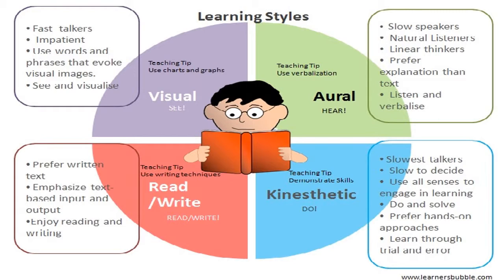Visual learners are fast talkers, impatient, use words and phrases that evoke visual images, and visualize. Aural learners are slow speakers, natural listeners, linear thinkers, prefer explanation over text, and listen and verbalize. Kinesthetic learners are the slowest talkers, slow to decide, use all senses to engage learning, prefer hands-on approaches, and learn through trial and error. Read-write learners prefer written text, emphasize text-based input and output, and enjoy reading and writing.